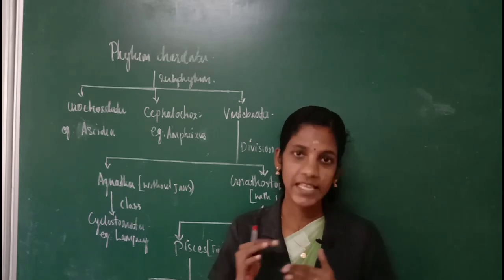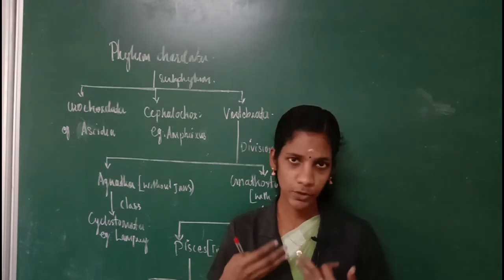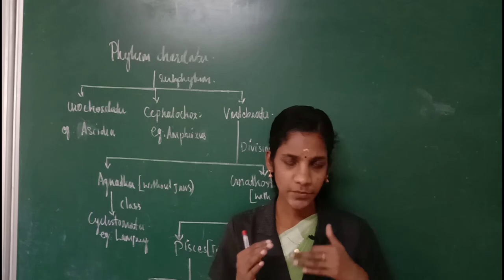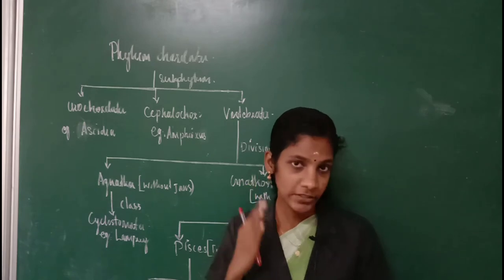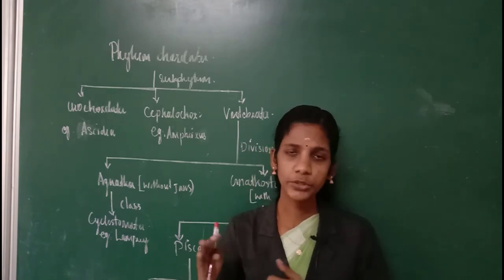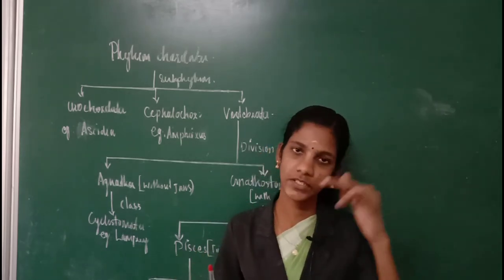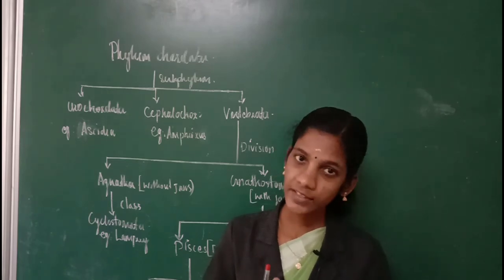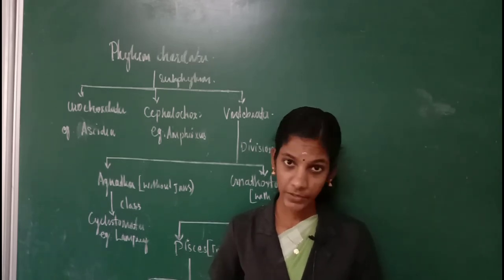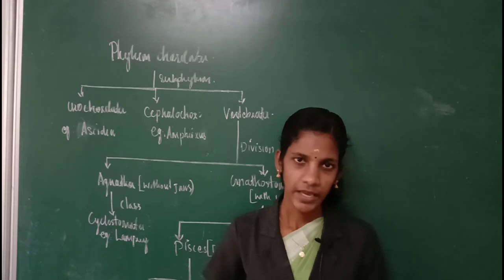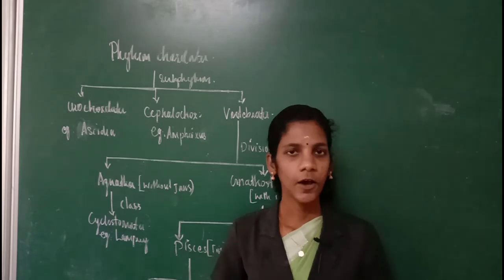Among these identifying features, we have to give more priority to the three main features — notochord, dorsal tubular nerve cord, and gill slits. If these features are present, we then consider other identifying features of the vertebrata, such as presence of eyes from the head region, presence of an endoskeleton, and presence of hemoglobin in the RBC.